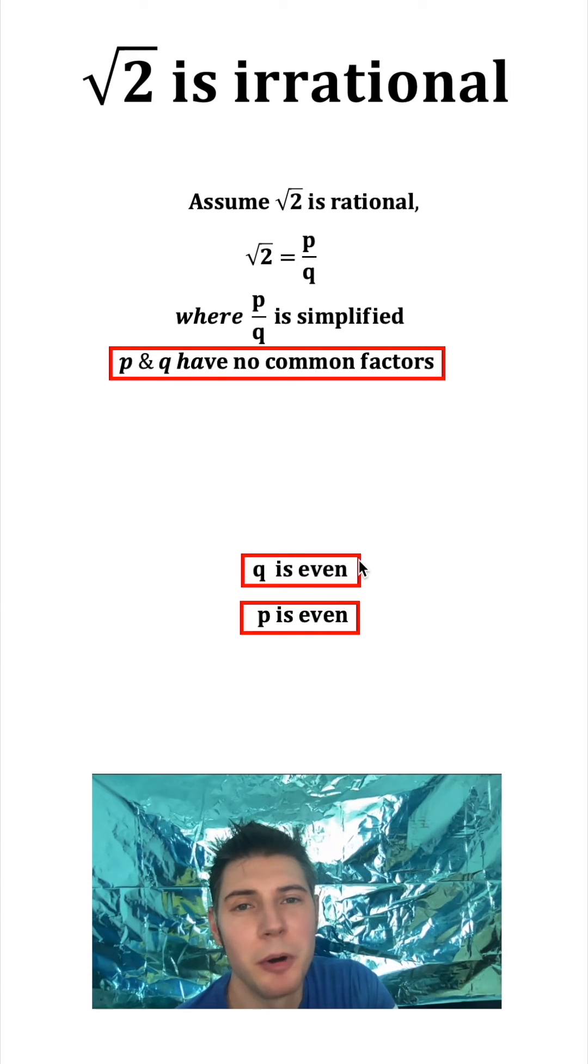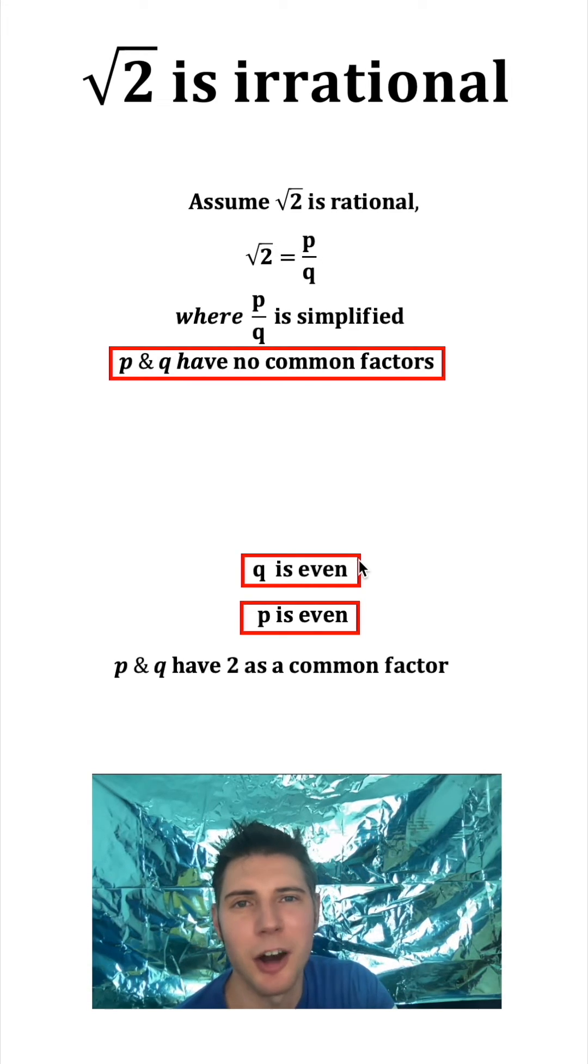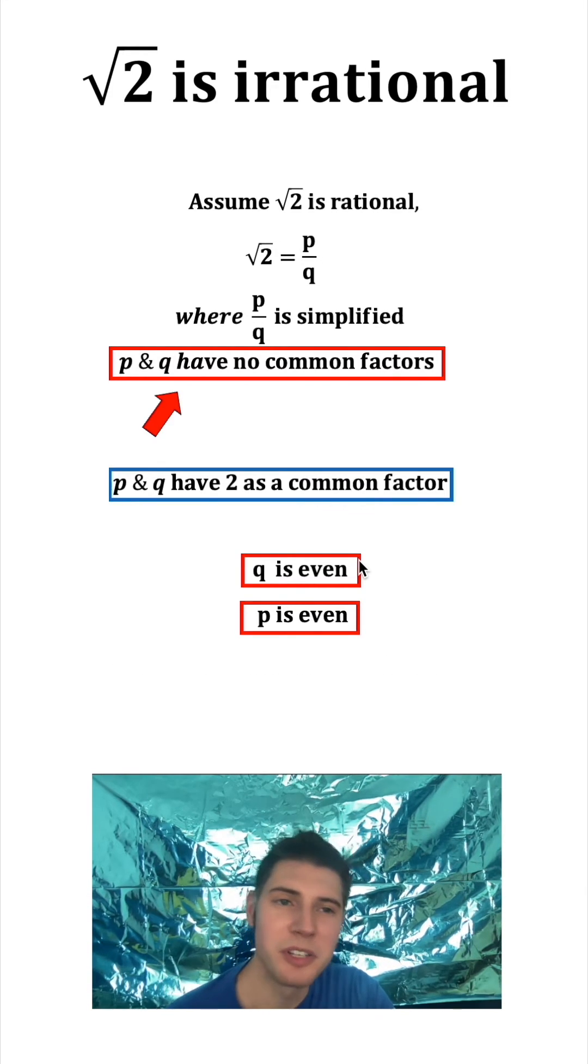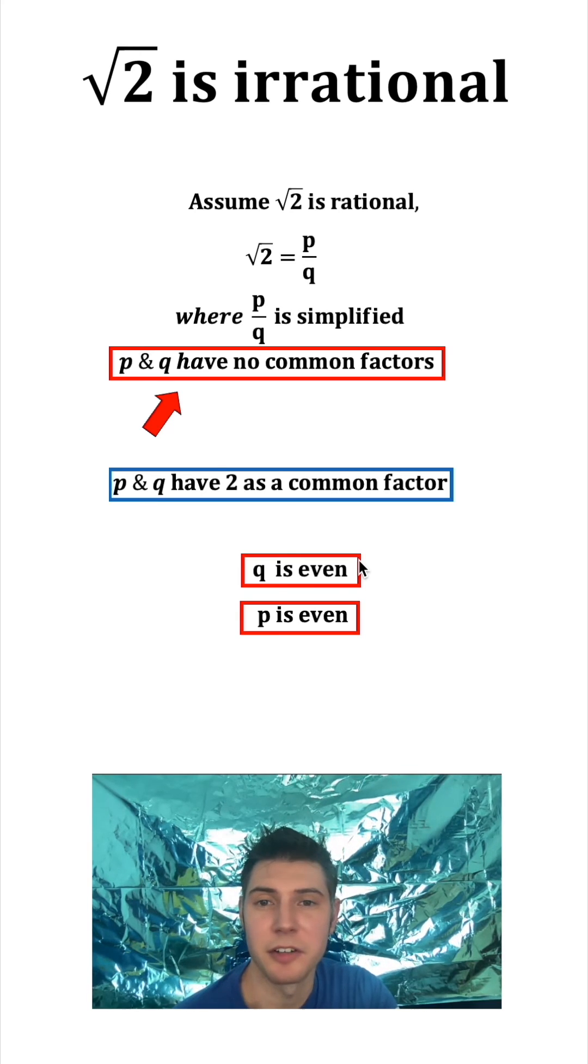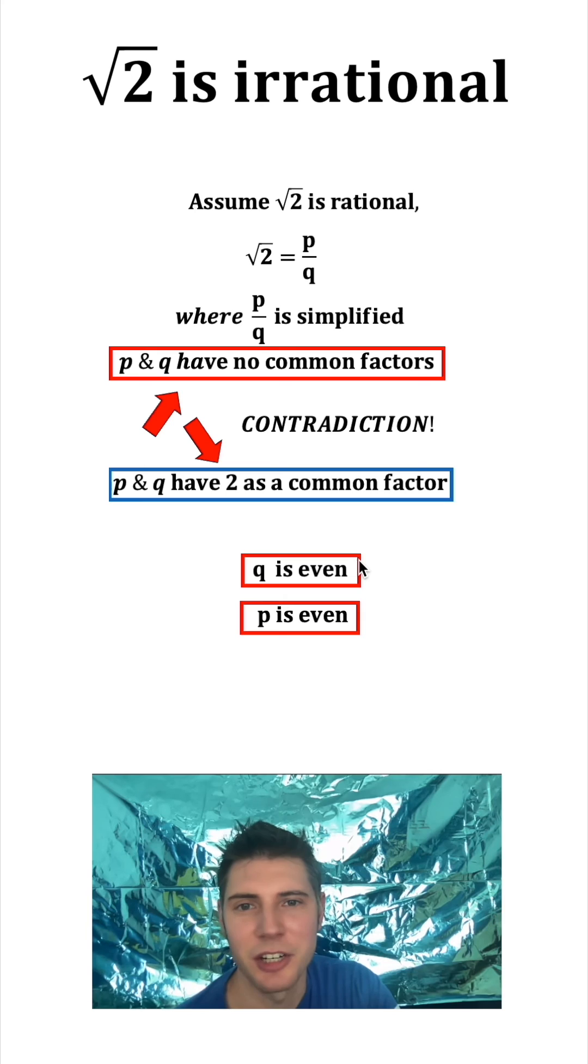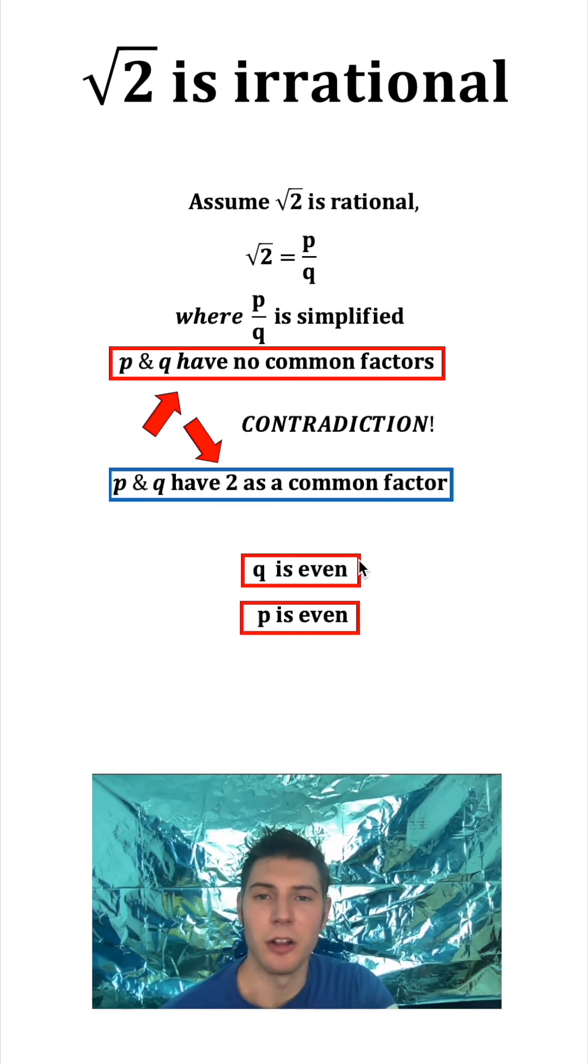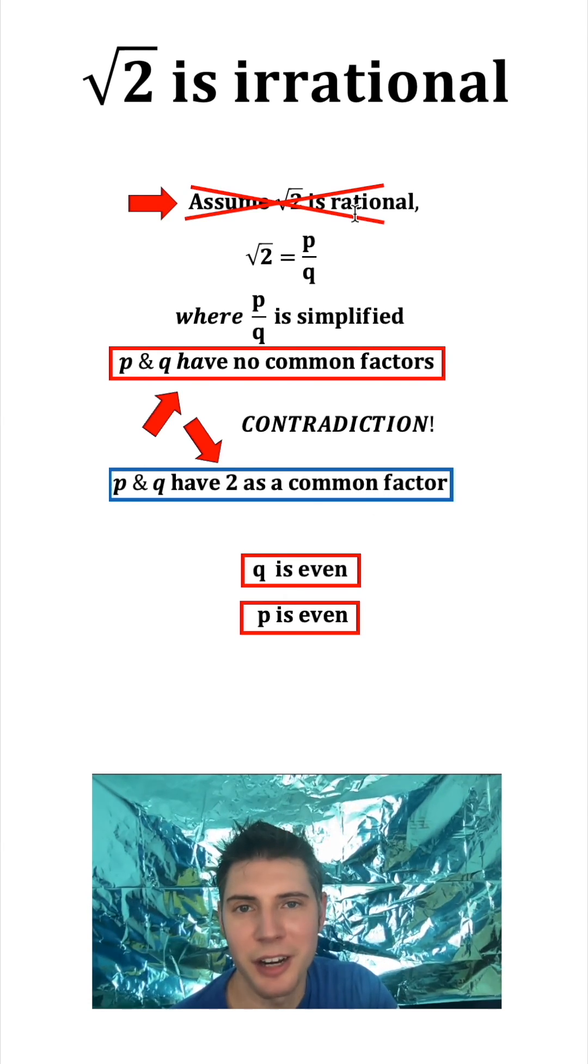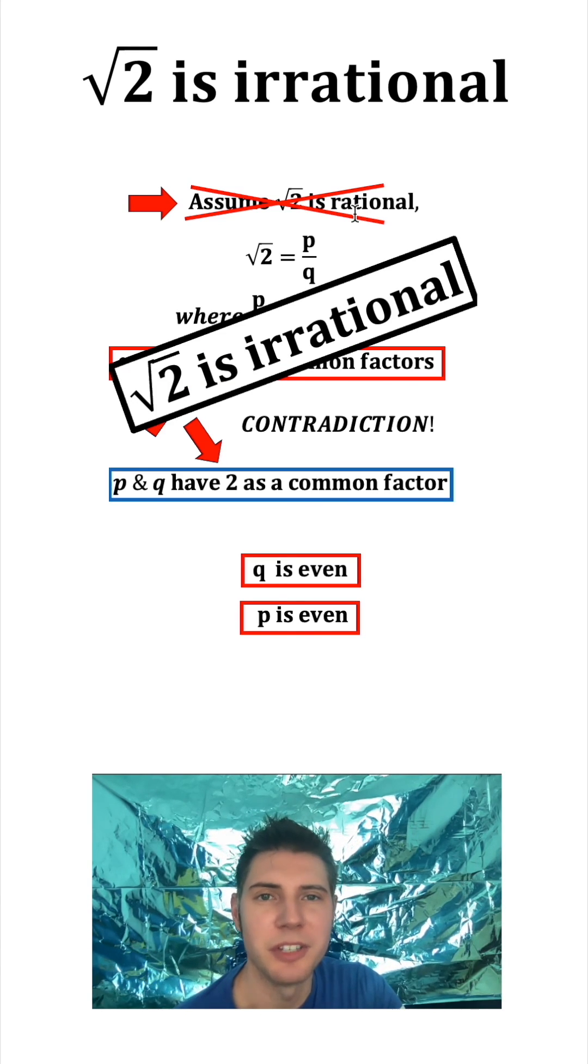Since P and Q are both even, we can say P and Q have 2 as a common factor. Let's bring it up. Before we said P and Q have no common factors, we show that P and Q must have 2 as a common factor. This is a contradiction. Because this contradiction logically followed from our assumption, we know that this assumption was incorrect. And so we can conclude that root 2 is irrational.